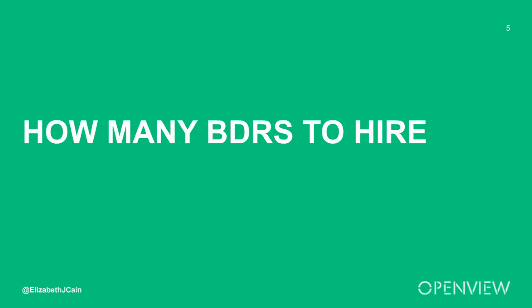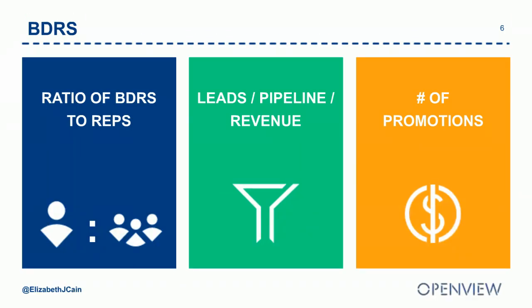So let's start with the question of how many BDRs to hire. When I was first starting the team, the CEO tapped me on the head and said go build a plan. People are looking for you to have a reason to hire that number, and there are a lot of ways to think about it. I encourage people to work backwards. There's a conversation to have around the ratio of BDRs to reps, or you can ask: do you have a problem with marketing-generated leads? Do you need to fill a pipeline deficit?